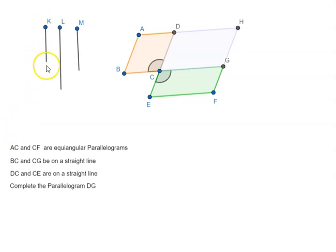We take an arbitrary magnitude, we take some magnitude and we find the fourth proportional of BC, CG and K.